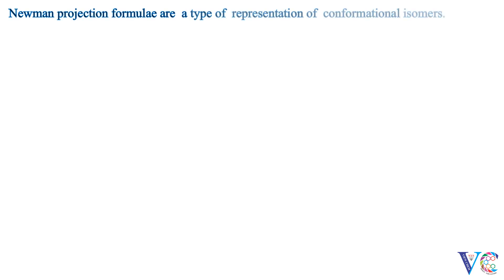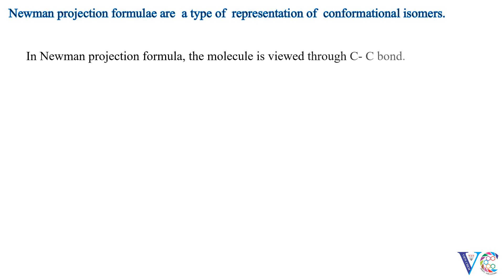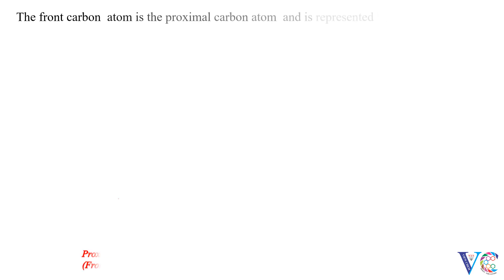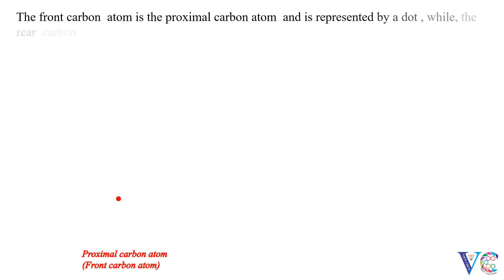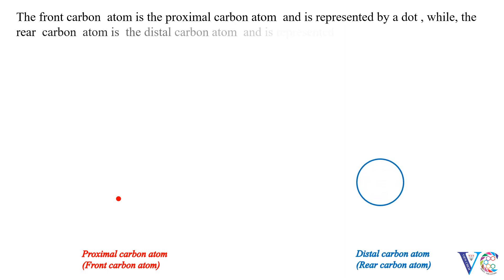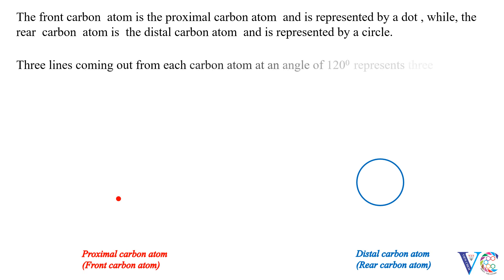Newman projection formulae are a type of representation of conformational isomers. In the Newman projection formula, the molecule is viewed through the C-C bond. The front carbon atom is the proximal carbon atom and is represented by a dot, while the rear carbon atom is the distal carbon atom and is represented by a circle. Three lines coming out from each carbon atom at an angle of 120 degrees represent three bonds.